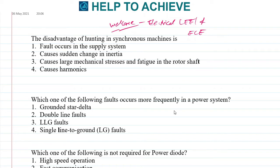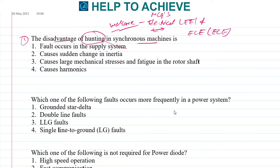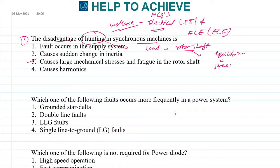Welcome to today's video where we'll be solving MCQs helpful for electrical engineers as well as electronics and communication engineers. Starting with the first question: what is the disadvantage of hunting in synchronous machines? When a sudden load is applied, the rotor shaft tries to settle near the equilibrium position, causing large stress. The correct answer is option three: it causes large mechanical stress and fatigue in the rotor shaft.